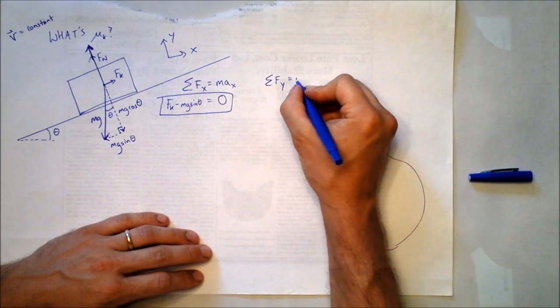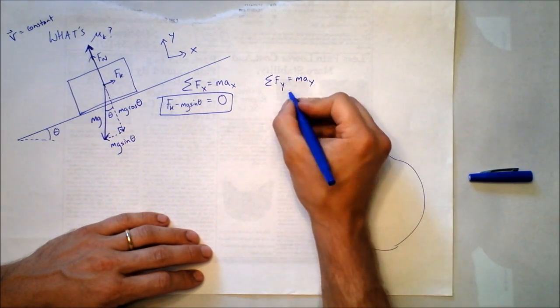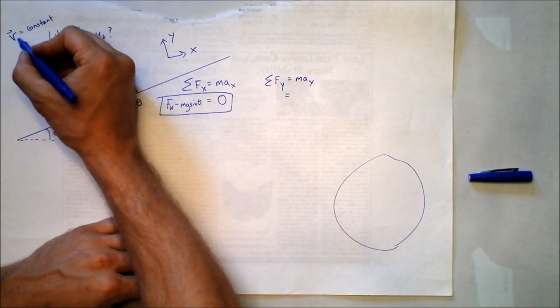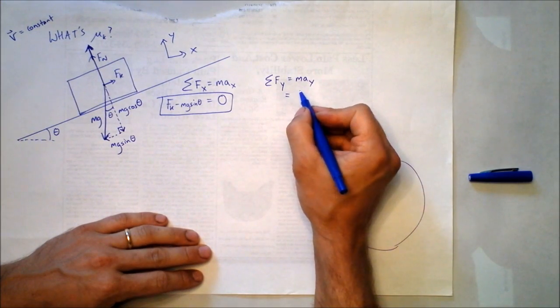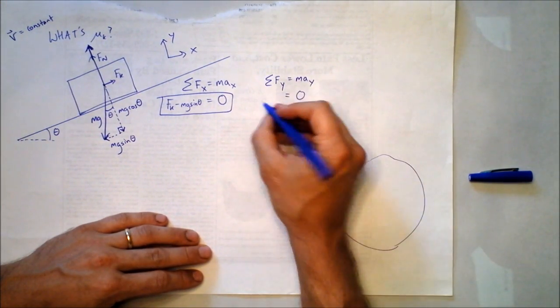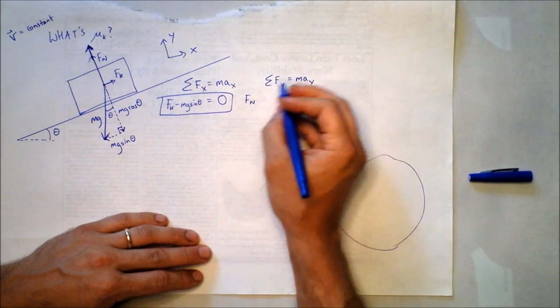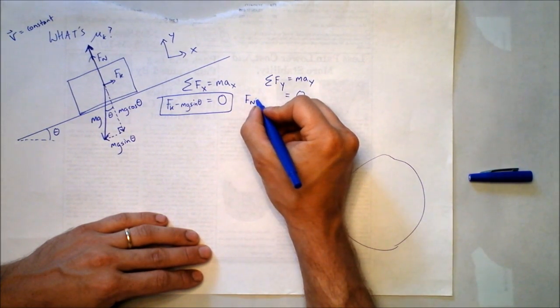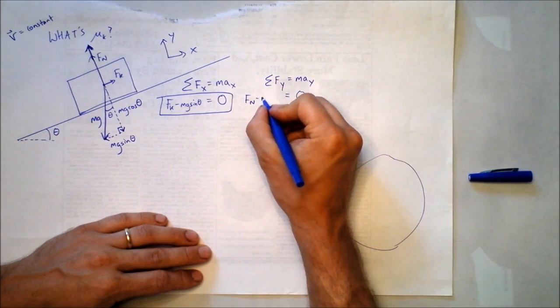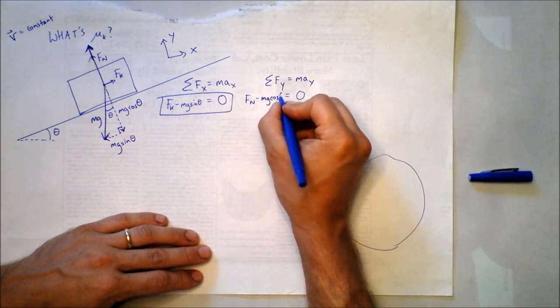The force in the y direction is mass times acceleration in the y direction. But again, they told us the velocity was constant, so we know there won't be any acceleration even in the y direction. We've got, in the y direction, we've got f sub n that acts directly up, but acting directly into the ramp is mg cosine theta.